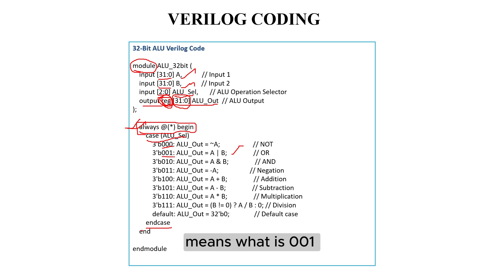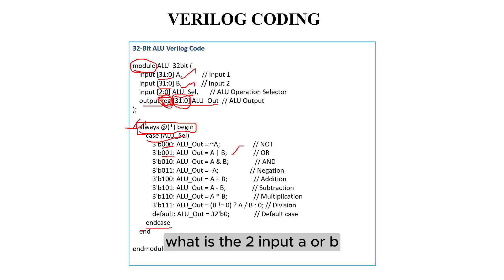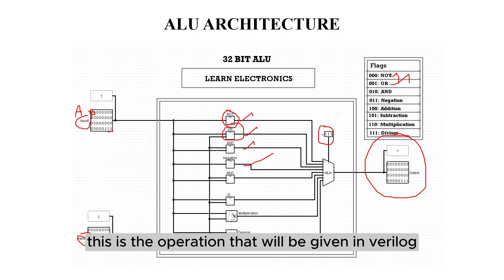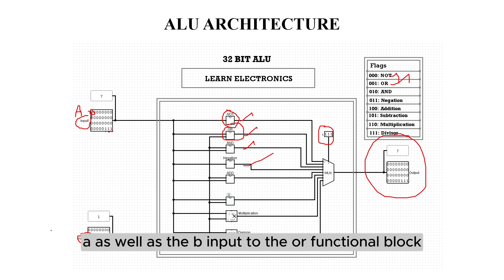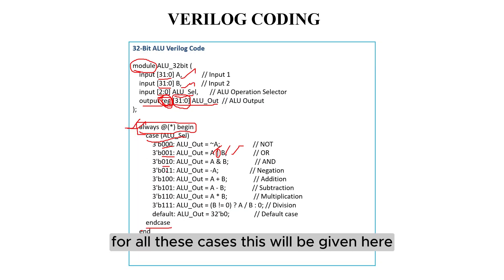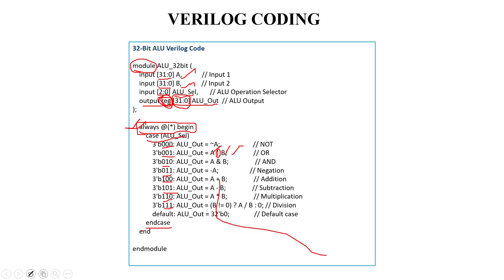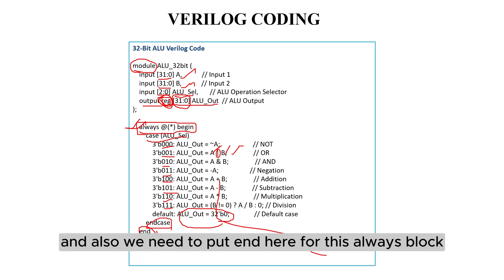For selection 0, 0, 1, we need to perform the OR gate. The OR gate takes two inputs: A or B. This is the operation that will be given in Verilog. For OR operations we need to give both A and B inputs to the OR function block, and this output will be given to multiplexer input 0, 0, 1. For every selection line it will perform some operation. The default case will set all bits to 0. We need to end the case block with endcase and also put end for the always block. The module is closed with endmodule.